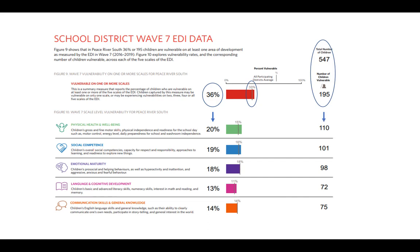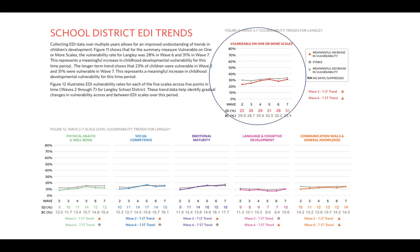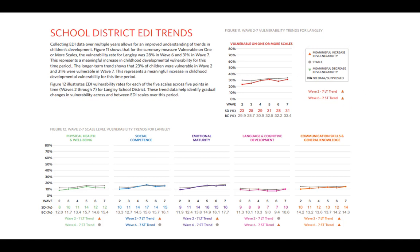Below is the number of children vulnerable for each of the individual scales. On page 21, we see the community trends over time. This is the trend line for 'vulnerable on one or more scales' for this community, which is Langley. The grey line on this graph is the provincial trend line. This community has a similarly increasing trend to the province. However, as is shown here, this community had meaningful increases in vulnerability over both the short term and the long term. Looking at this data, consider which scales have the highest vulnerability levels and which the lowest. Emotional maturity is the highest for Wave 7 at 16%, followed closely by social competence at 15%, and the lowest is language and cognitive development at 10%.